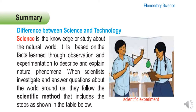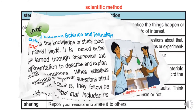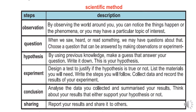Scientists follow a systematic method to investigate and answer various questions about the natural world. The steps of the scientific method include: Observation - by observing the world around you, you can notice things that happen or the phenomena, or you may have a particular topic of interest.